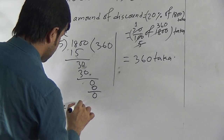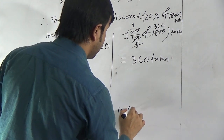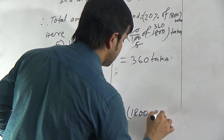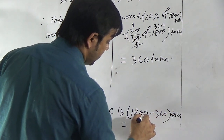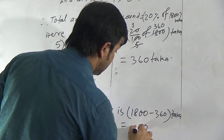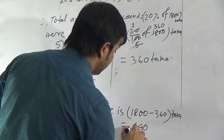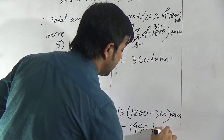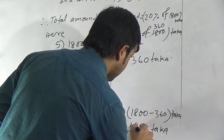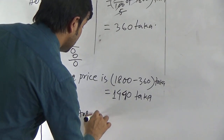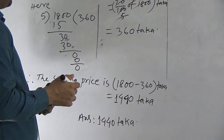Therefore, the selling price = 1800 minus 360 taka. Simple subtraction: 0 minus 0 is 0, 7 minus 3 is 4. So the required selling price is 1440 taka. Our answer for this question is 1440 taka.